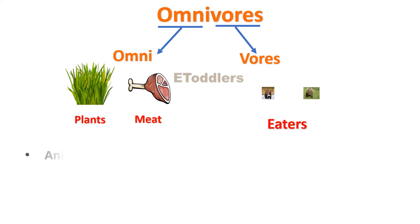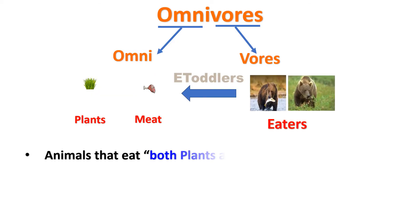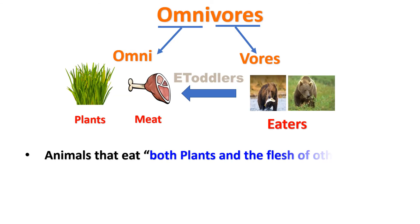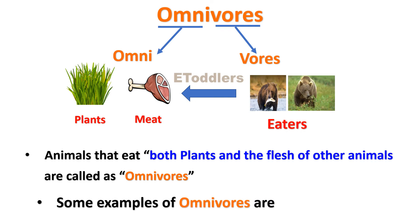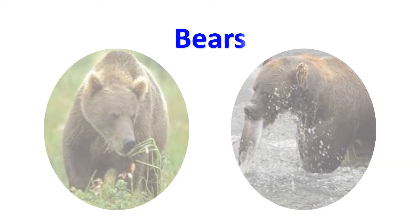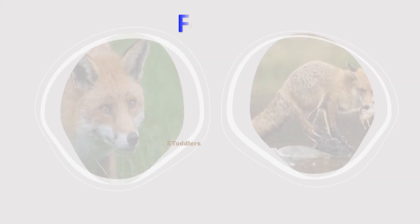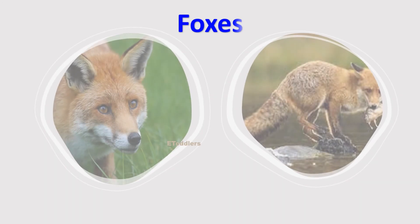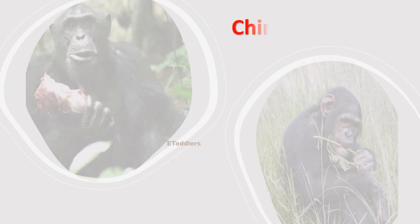Animals that eat both plants and the flesh of other animals are called omnivores. Some examples of omnivores are: Bears, Foxes, and Chimpanzees.